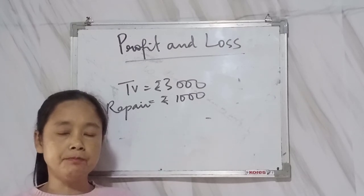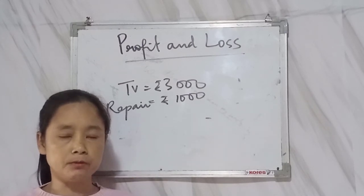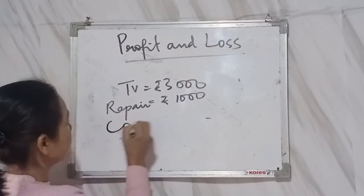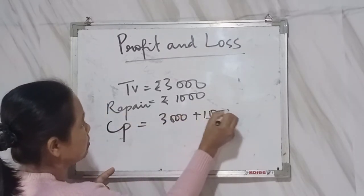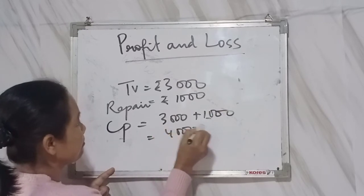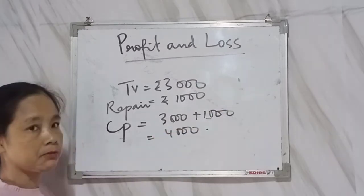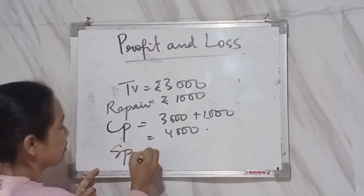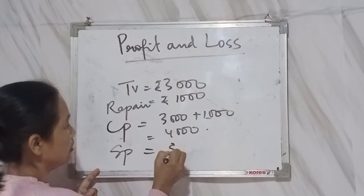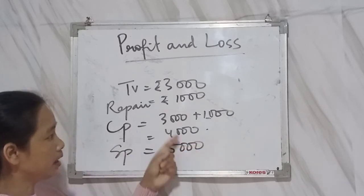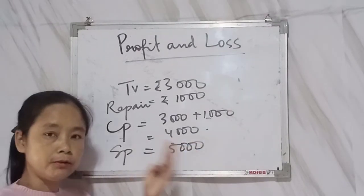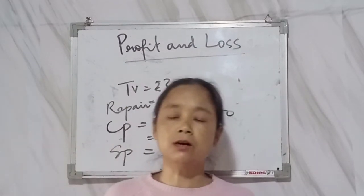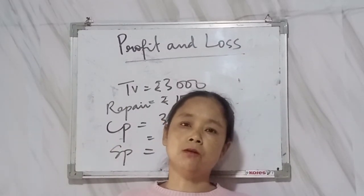So the cost price becomes 3,000 plus 1,000, which is 4,000 rupees. Then if you sell it again for 5,000 rupees, you have a profit of 1,000 rupees. From that, using the formula, you can find the profit or profit percent.